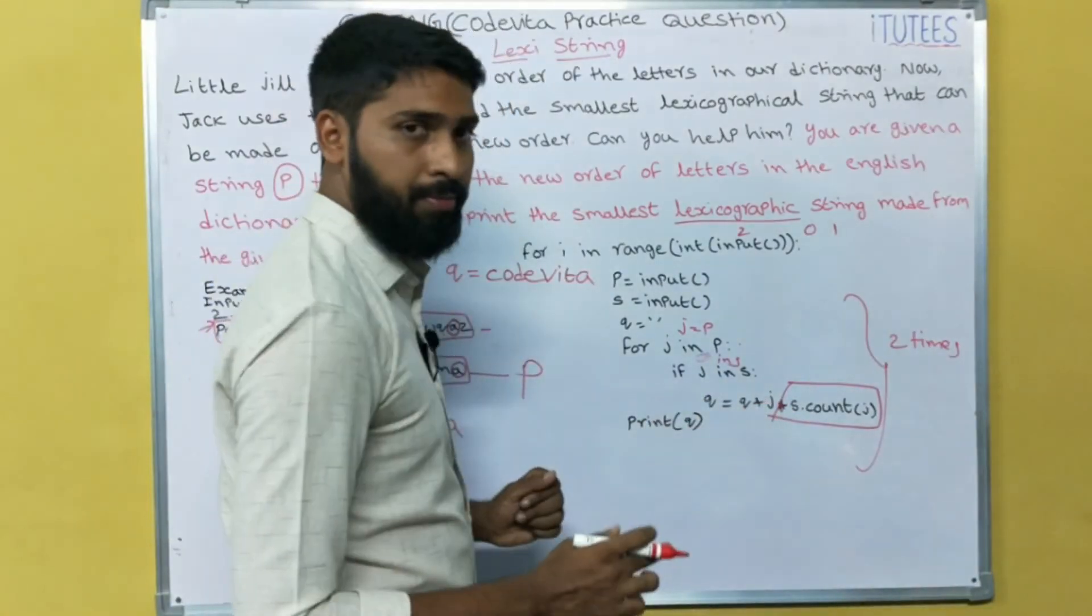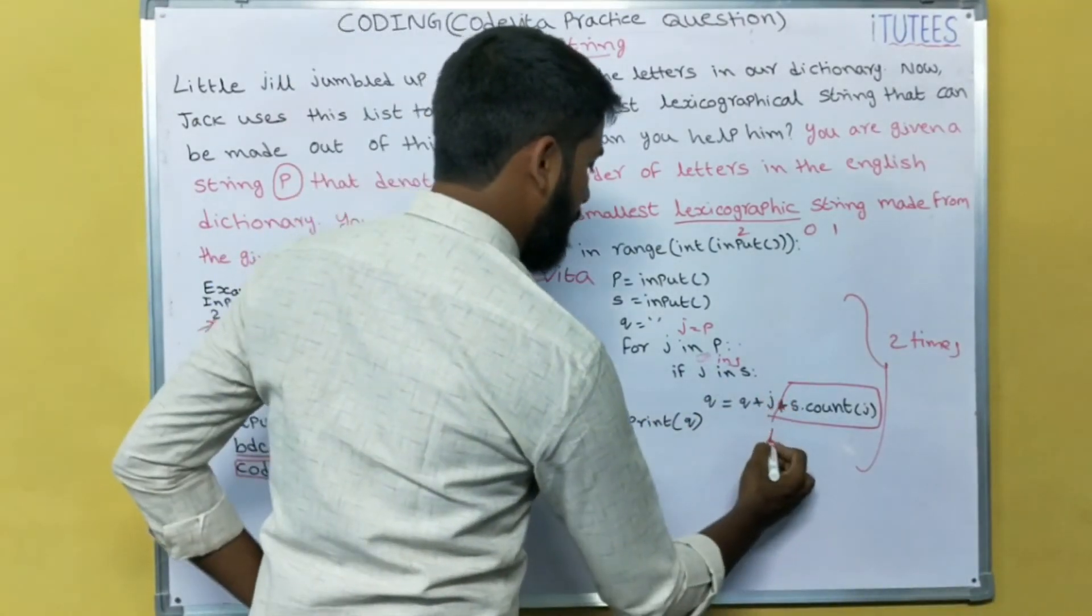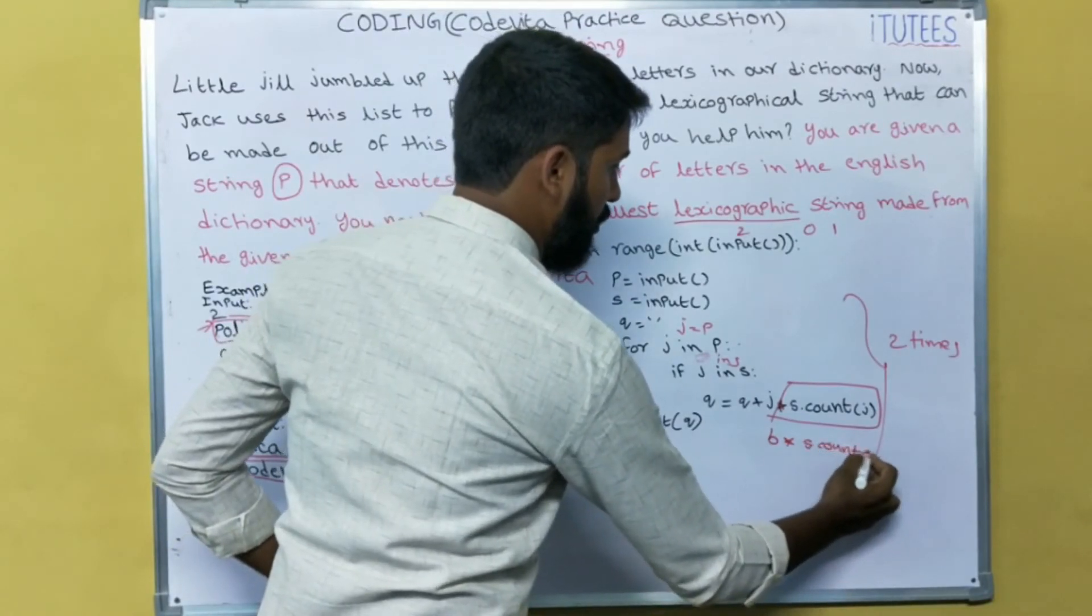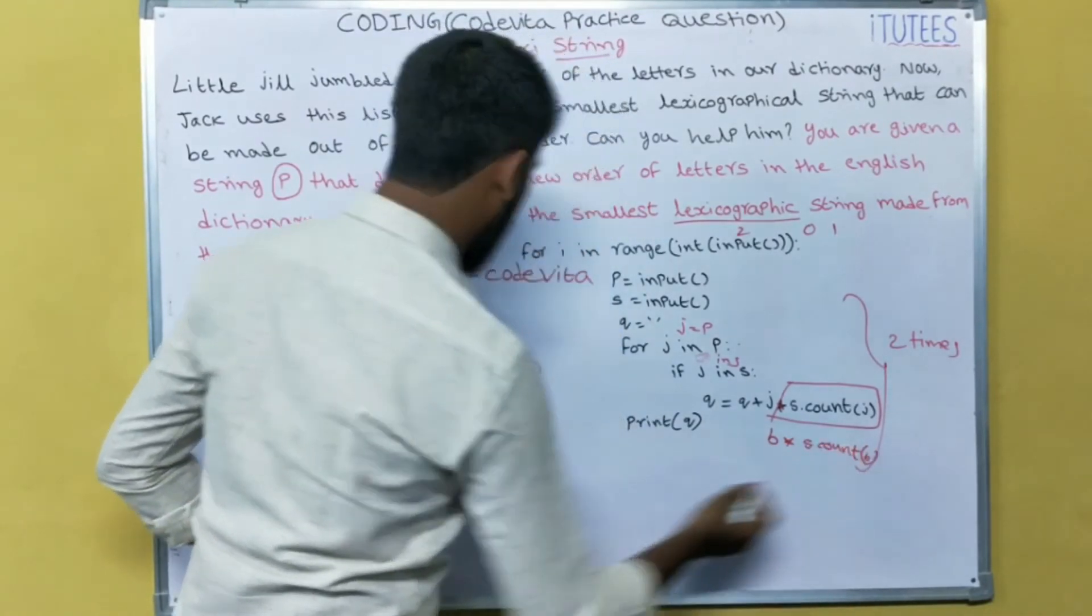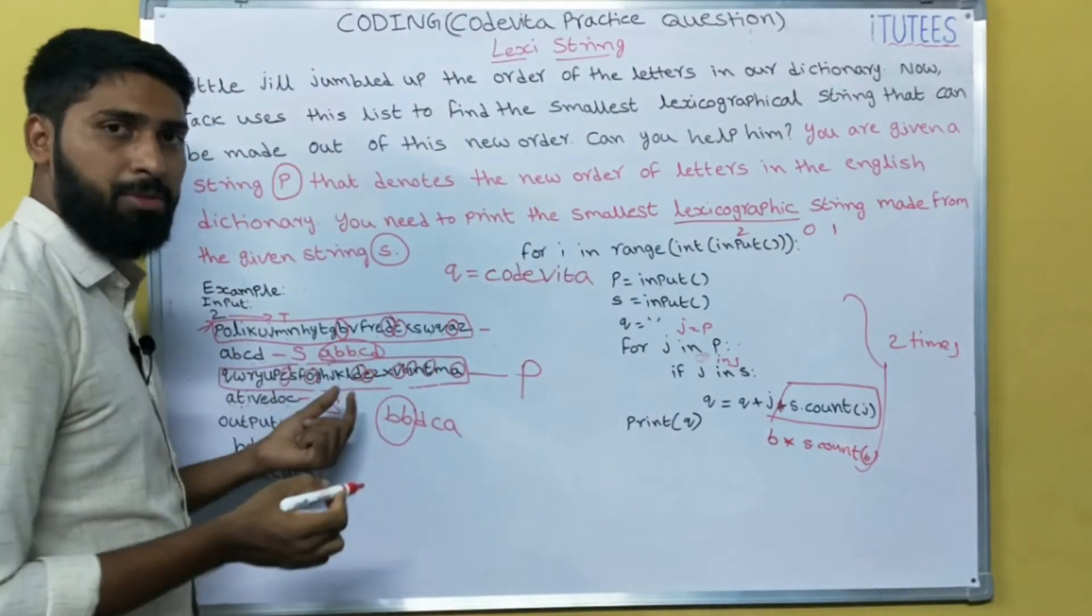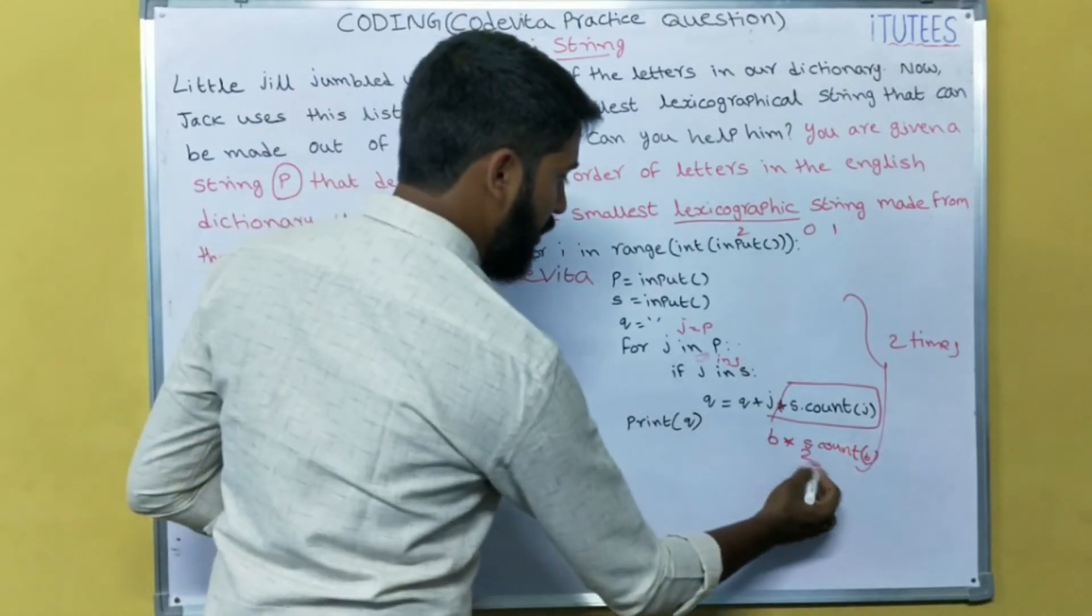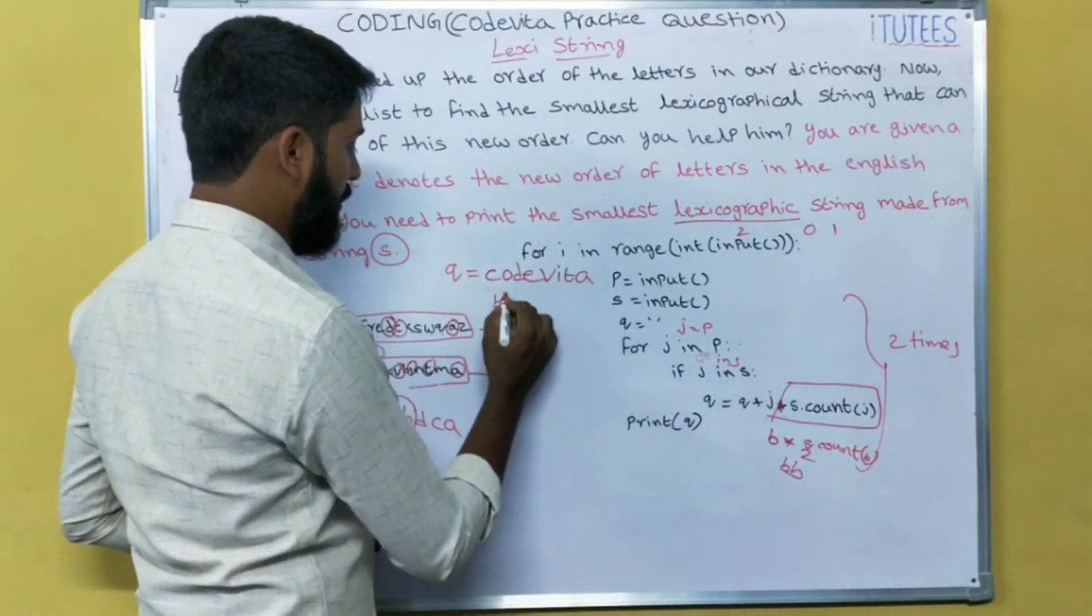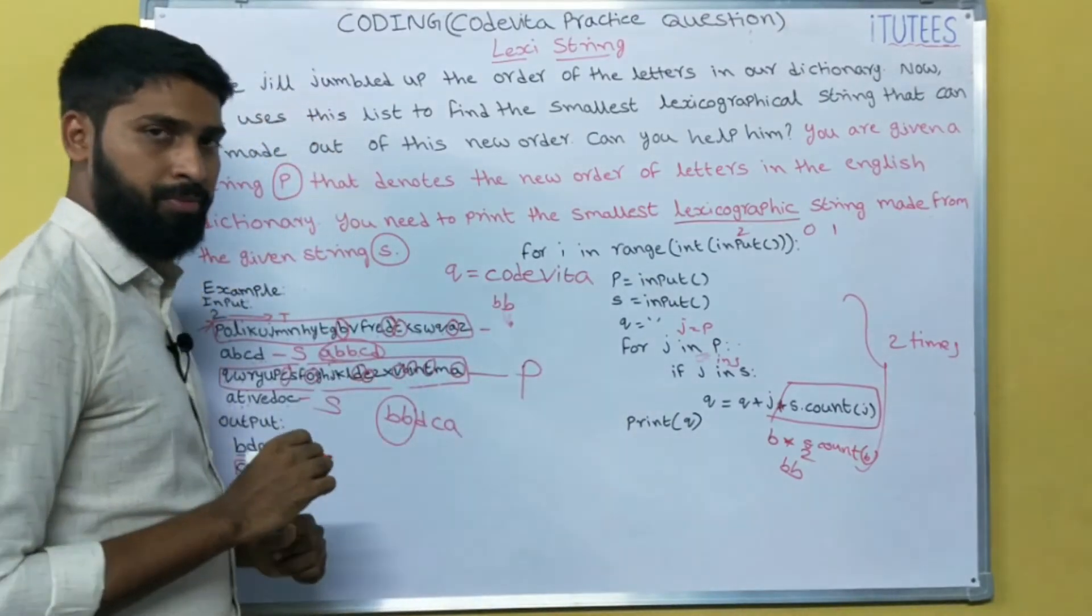So how we can know that? J, repetition operator. So what is the J, for example B? Into S dot count of J. So that J is B. Count of B means this is the S, count of B means how many times B? Two times. So B into two means BB. So BB is appended to Q.